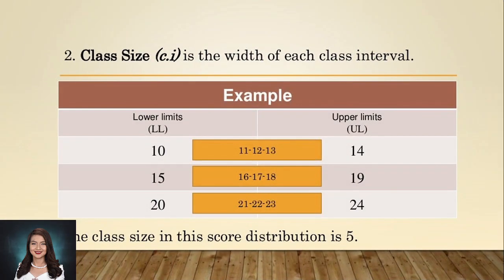Let's proceed to class size or CI. Class size is the width of each class interval. For example, in the groups 10 to 14, 15 to 19, and 20 to 24, each group has an interval. In each group mentioned, there is a spacing called interval. We have many ways to compute our interval. First is by counting — just like 10, 11, 12, 13, and 14 — so our class size is 5. Another method is by subtracting the upper limit from the lower limit then adding 1: 14 minus 10 equals 4, plus 1 equals 5. And 5 is our class size in this score distribution.